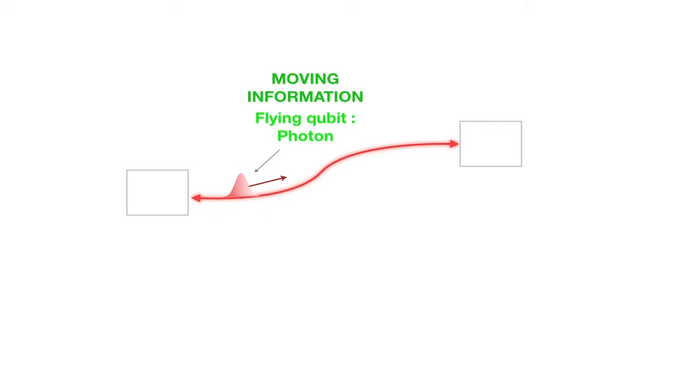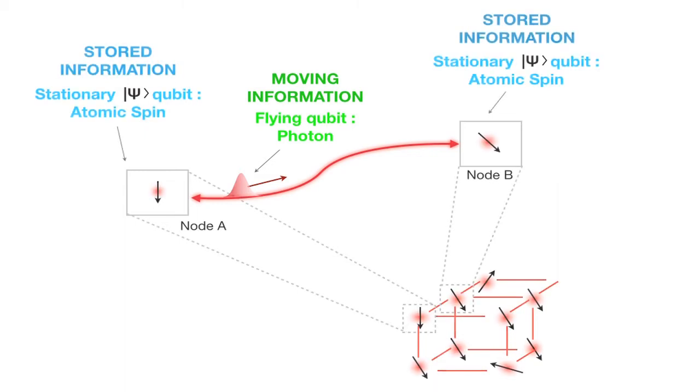And then, whereas in a classical computer, typically your wires are electrical wires that carry currents, we replace these with optical wires, waveguides, that carry photons. And then we have these two ingredients, these stationary memories connected via photons.